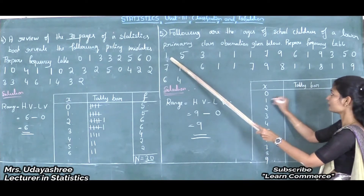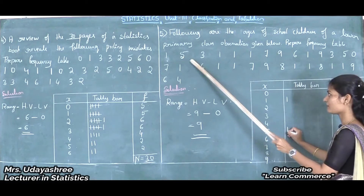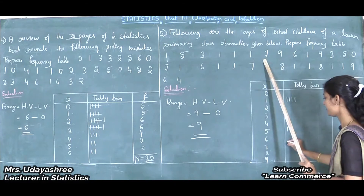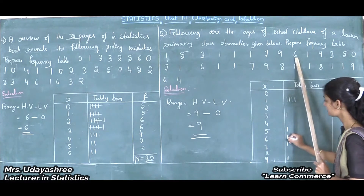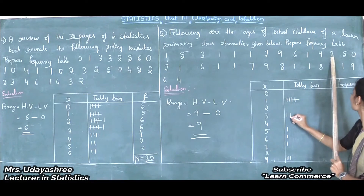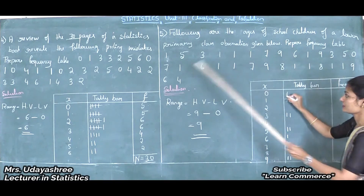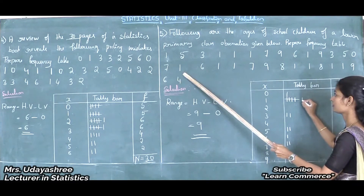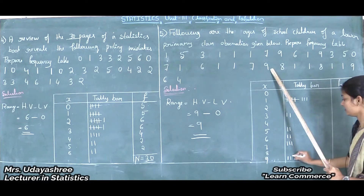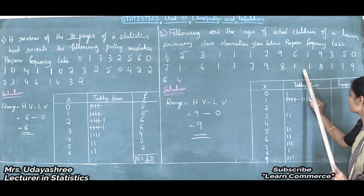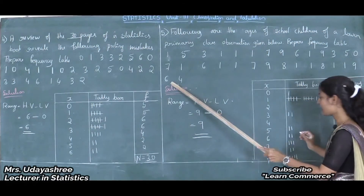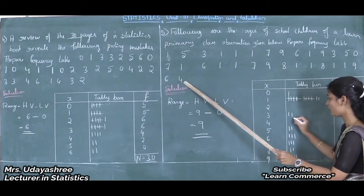Now placing tally marks: the first observation is 1, so in front of 1 I put 1 mark. Next is 5, then 3, 1, 1, 1, 7, 9, 6, 1, 9, 3, 5, 0, 7, 1, 6, 1, 1, 7, 9, 8, 1, 1, 8, 1, 1, 9. Then the next value is 6, so 1 mark in front of 6. And next is 4, so 1 mark in front of 4.